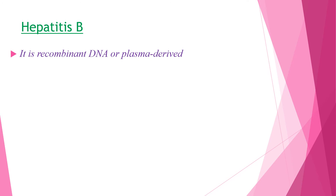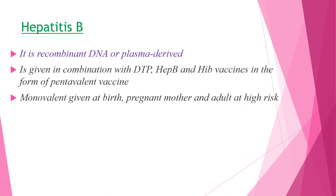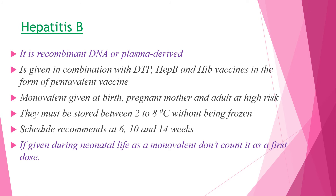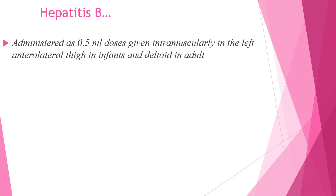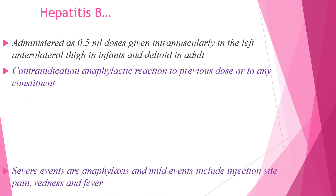Hepatitis B is a recombinant DNA or plasma-derived vaccine. It is given in combination with other vaccines as pentavalent vaccine in our country, and monovalent vaccines are given at birth for pregnant mothers and adults at high risk. They must be stored between two to eight degrees Celsius without being frozen. The schedule is at six, ten, and fourteen weeks for infants. If given during neonatal life as a monovalent dose, do not count it as the first dose. It is administered at the left anterolateral thigh in infants and the deltoid in adults with a dose of 0.5 ml.